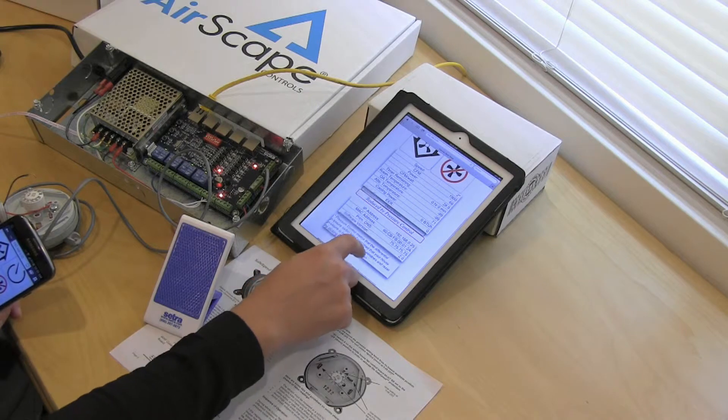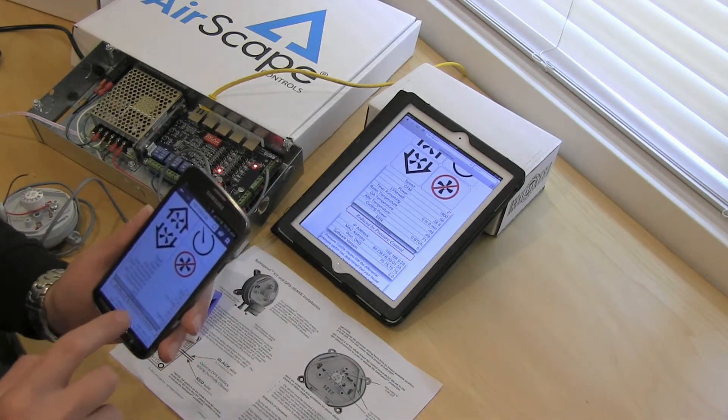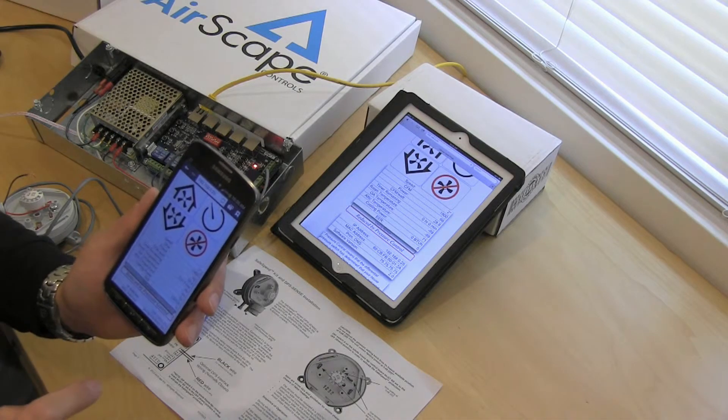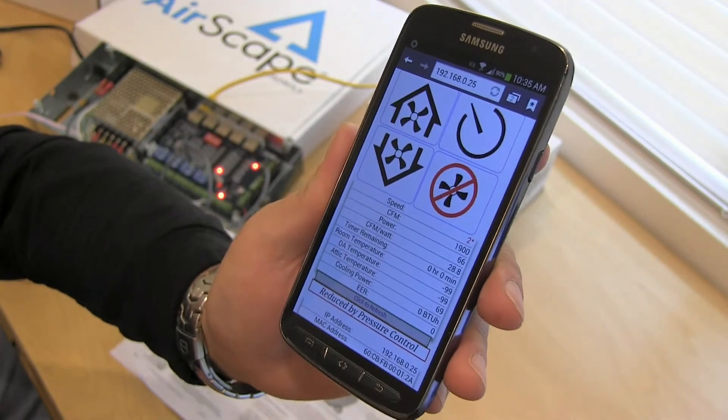And again we have the message reduced by pressure control. And if I refresh my phone interface, you can see the same reading. Speed number 2, reduced by pressure control.